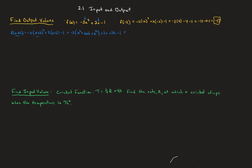We'll distribute that negative 3 to get negative 3x squared, minus 6xh, minus 3h squared, and still we have the plus 2x plus 2h minus 1. Combining like terms: there's only one x squared term, so that's negative 3x squared. The negative 6xh is by itself. So we have negative 3x squared minus 6xh minus 3h squared, plus 2x plus 2h minus 1.